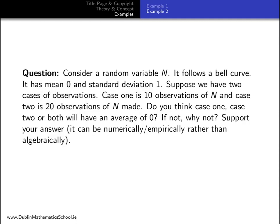Let's look at another example. Consider a random variable n. It follows a bell curve. It has mean 0 and standard deviation 1. Suppose we have two cases of observations. Case 1 is 10 observations of n. And case 2 is 20 observations of n. Do you think case 1, case 2 or both will have an average of 0? If not, why not? Support your answer. It can be numerically or empirically rather than algebraically.